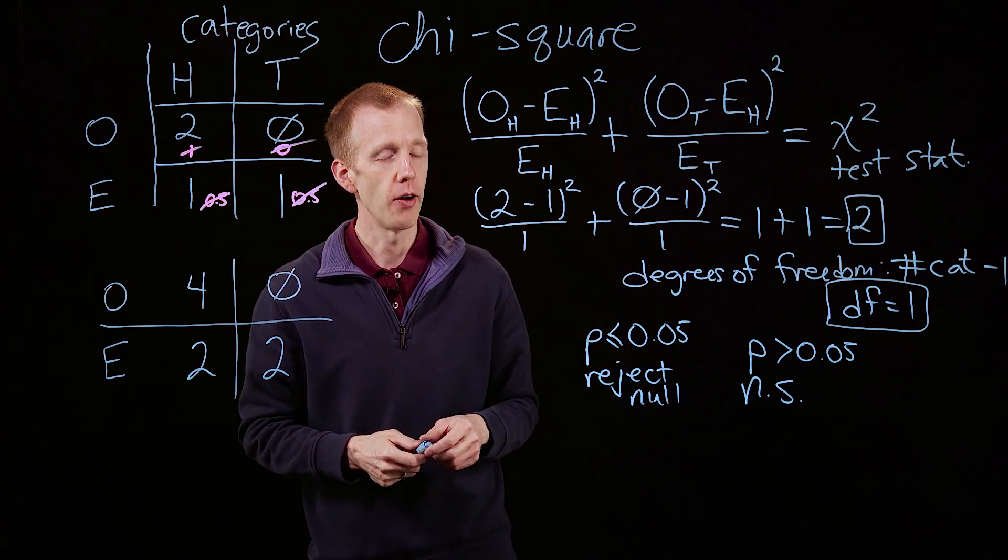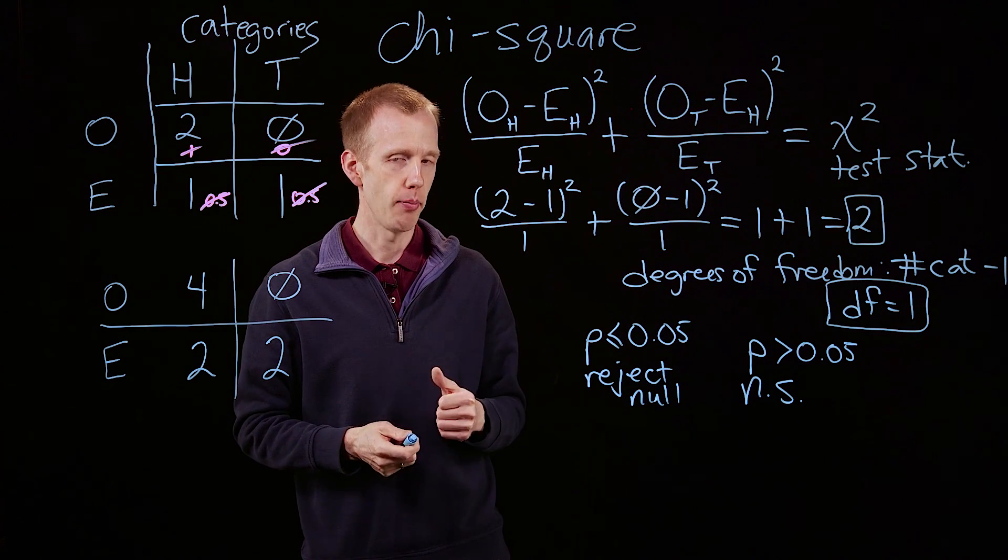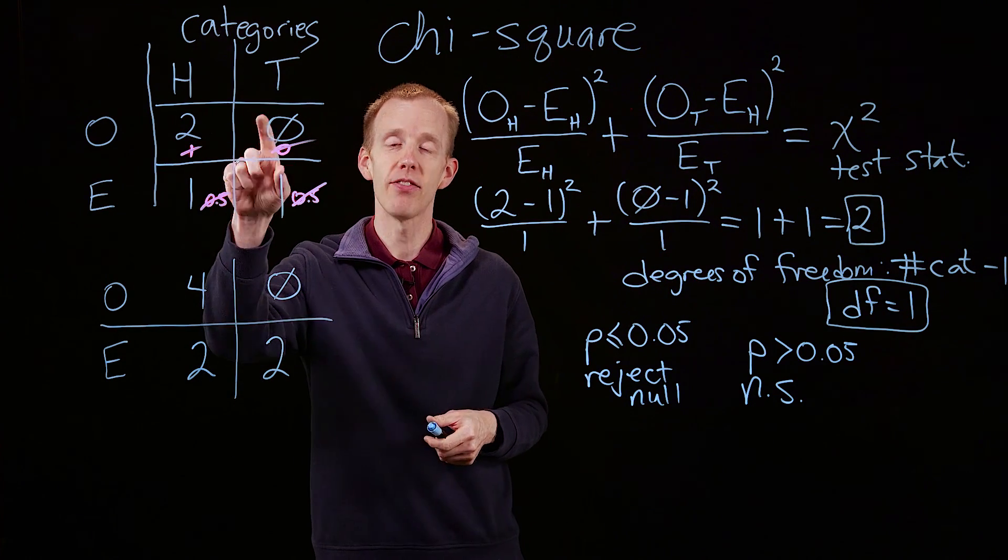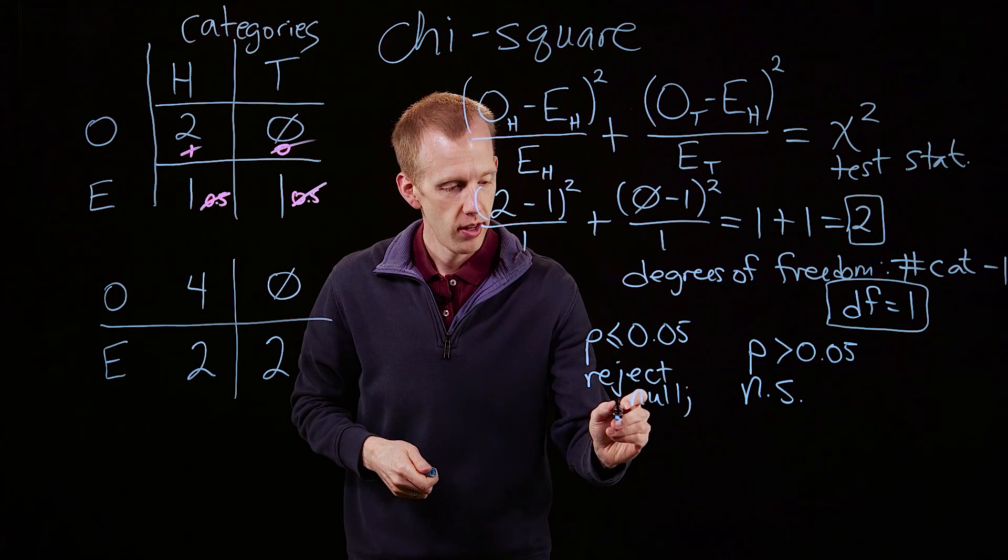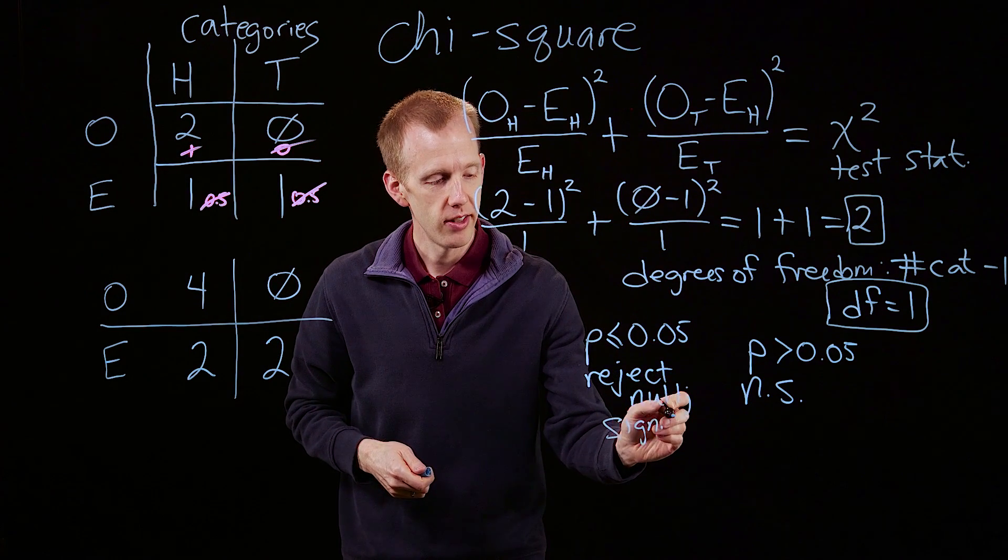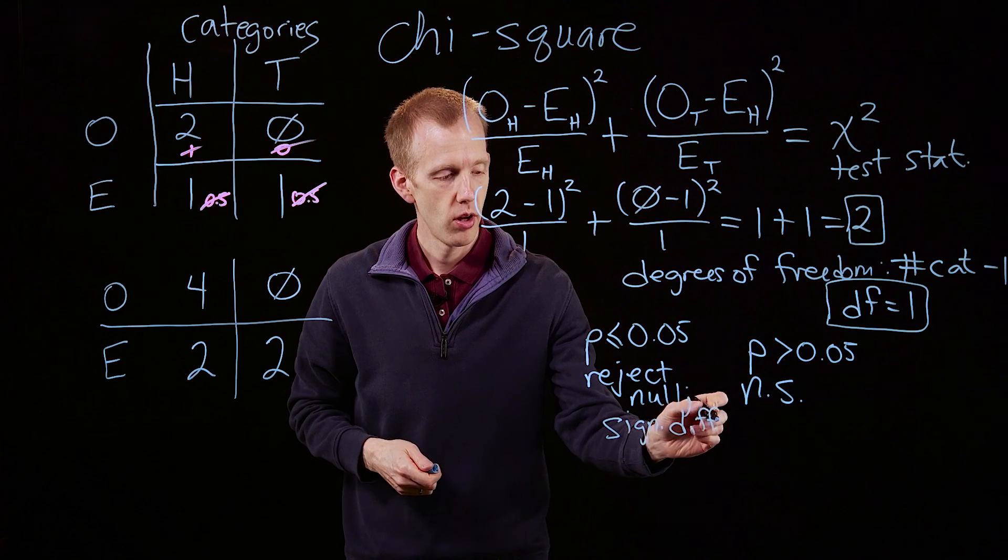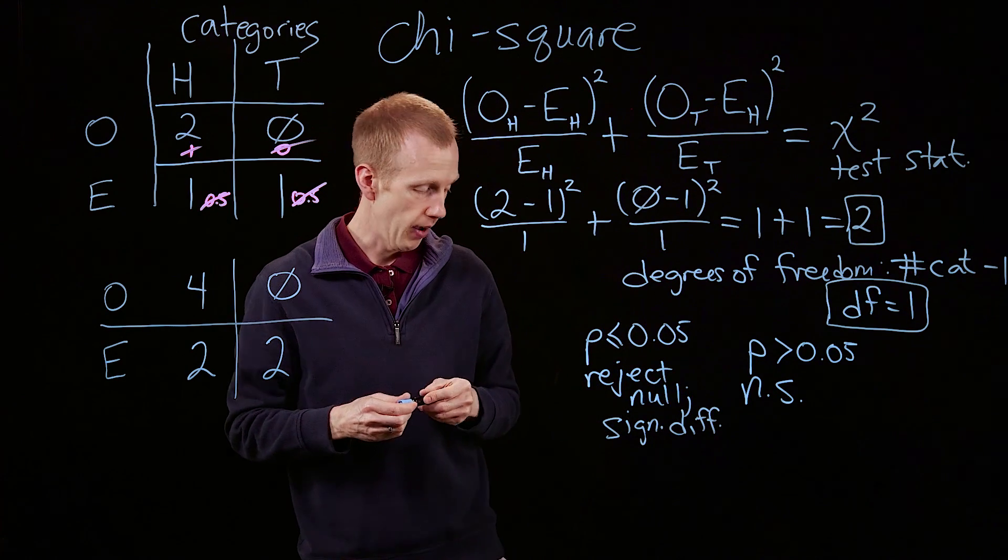So it's p less than 0.05 when we reject the null hypothesis, which means that there's a significant difference, if we find this, there's a significant difference between the observed and the expected values.